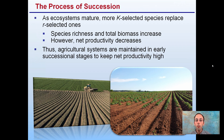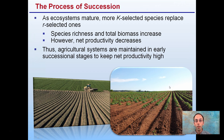In an ecosystem, mature K-selected species, which produce fewer offspring, replace the R-selected ones. Species richness and total biomass increase; however, net productivity will decrease. Thus, agricultural systems are maintained in early successional stages to keep net productivity high. By tilling an area and monocropping — growing only one crop in long rows — we're actually keeping the system in early succession, which is highly productive. K-selected species such as large oak or maple trees will be slightly less productive but will increase overall biomass.